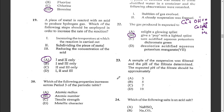Question twenty-three: a sample of the suspension was filtered and the pH of the filtrate determined. The expected pH of the filtrate should be approximately 10, because it is a base — anything greater than seven.